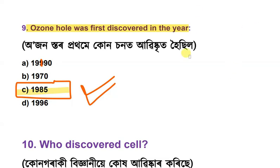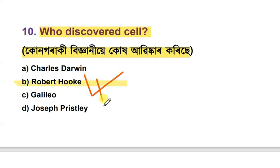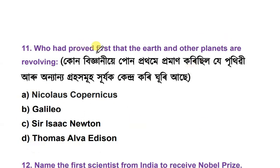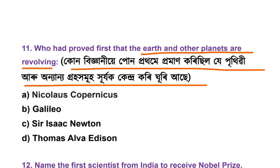The next questions are: who discovered the cell, and who first proved that the Earth and other planets are revolving? The options include Nicholas Copernicus, Galileo, Isaac Newton, and Thomas Alva Edison. The answer is Nicholas Copernicus.